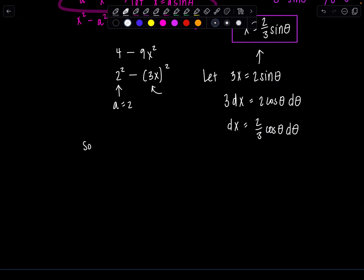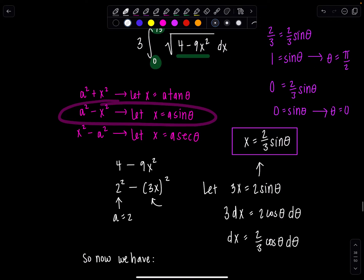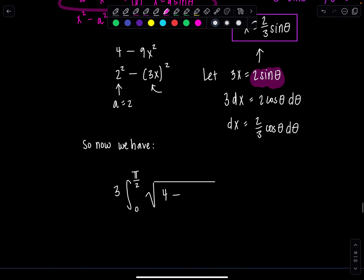So now, we have 3 integral, 0 to π/2, and then we had square root. It was 4 minus 9x² squared, which remember, that's 3x quantity squared. Well, what's 3x equal to? 2 sine theta. So we have 2 sine theta squared, and then dx. What's dx equal to? You have it right here, 2/3 cosine theta d theta.